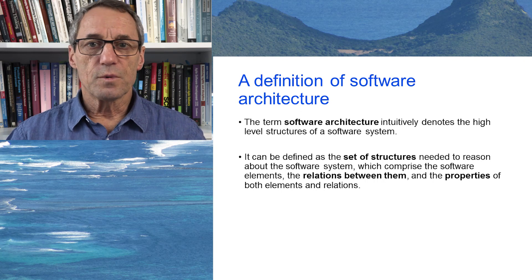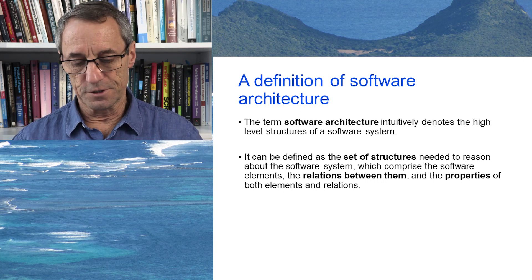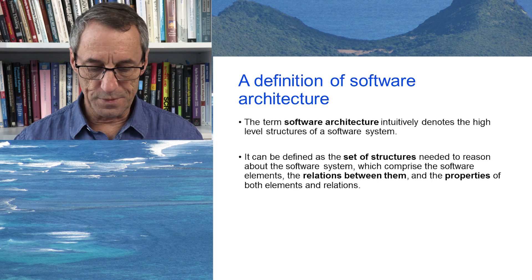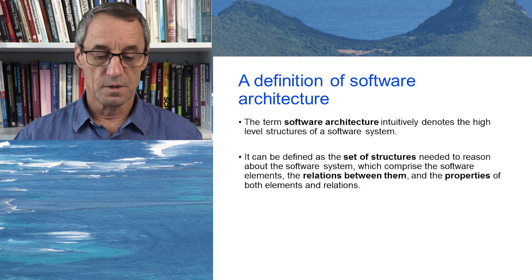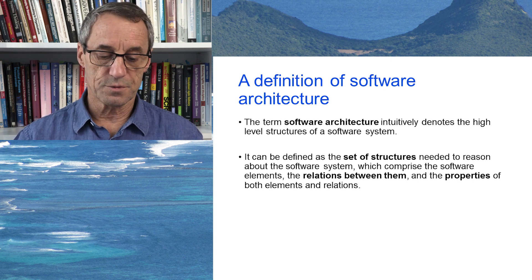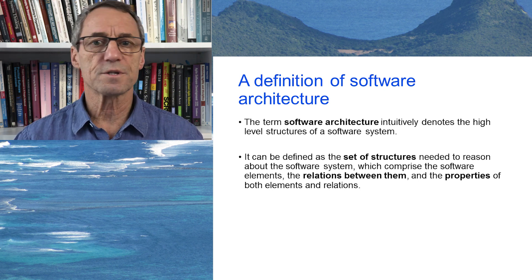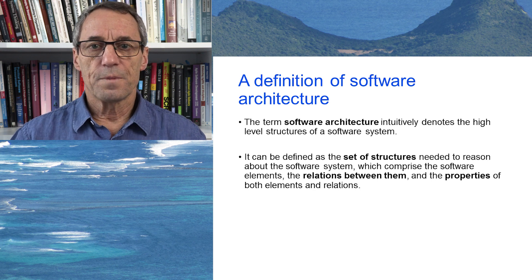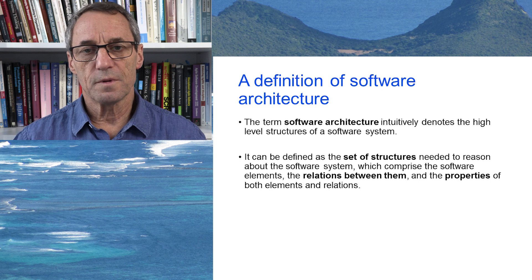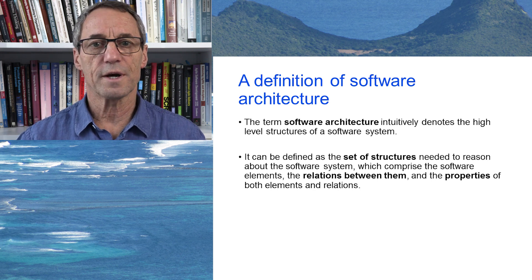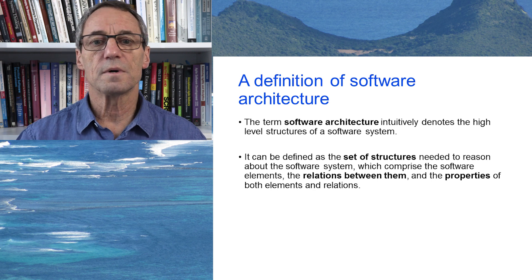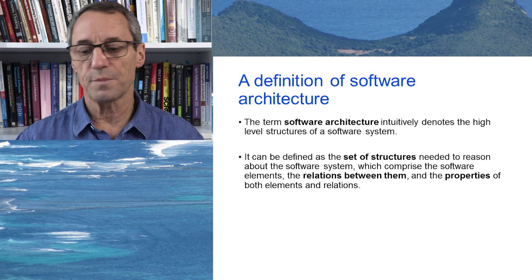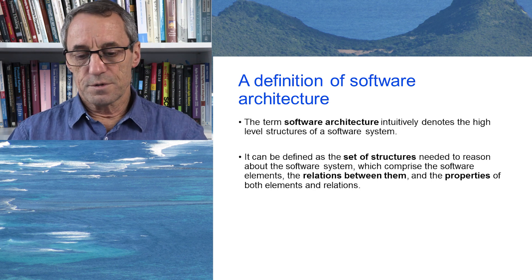Let's have a look at software architecture itself — what is it and how do you describe it? The definition that crops up again and again is that software architecture is a set of structures needed to reason about the software system, which comprises the software elements, the relationships between them, and the properties of both. Basically, it's the components of a system, their properties, and their relationships. This definition applies beyond just software development — you can apply it to physical architecture, like a house.